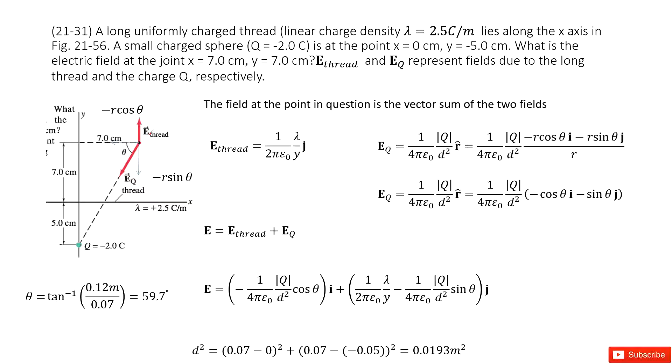We can write down the electric field for the thread. This part we learned in the textbook about the electric field on a non-uniform charged thread. The formula is E_thread equals lambda over 2πε₀y in the j direction, where y is the distance from the position to the x-axis.